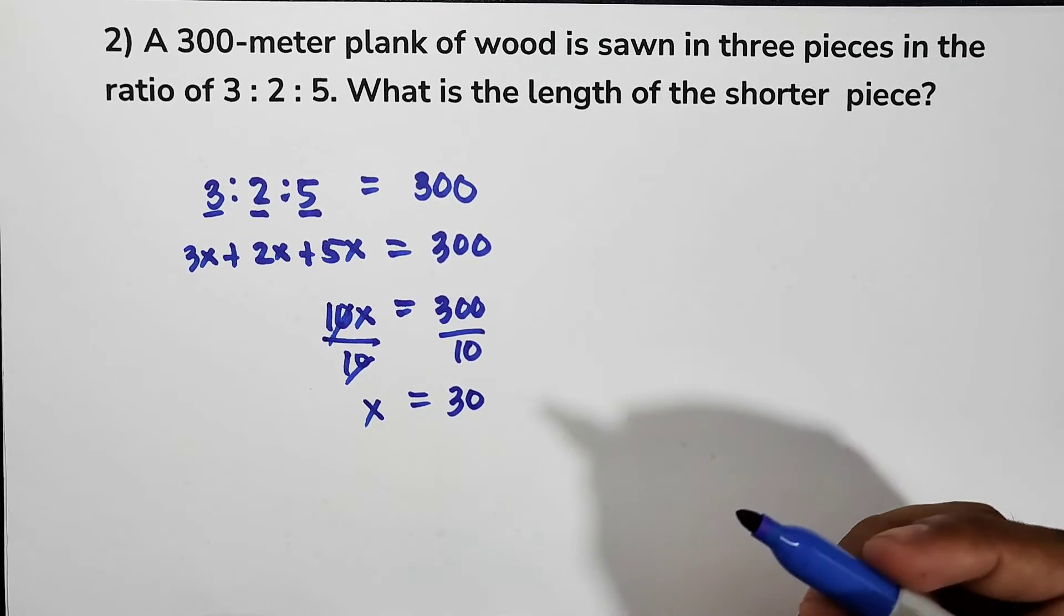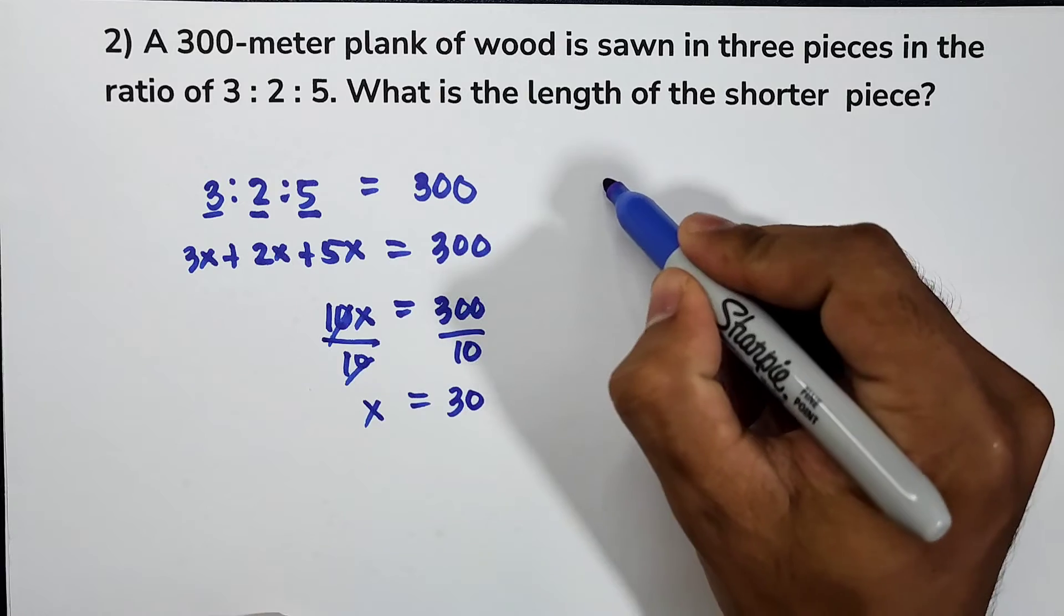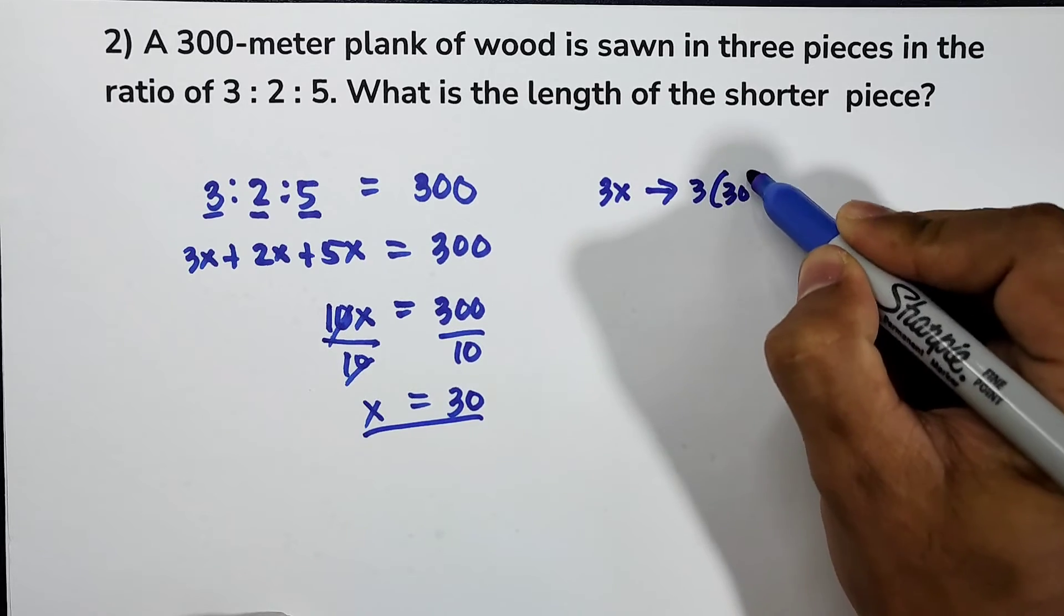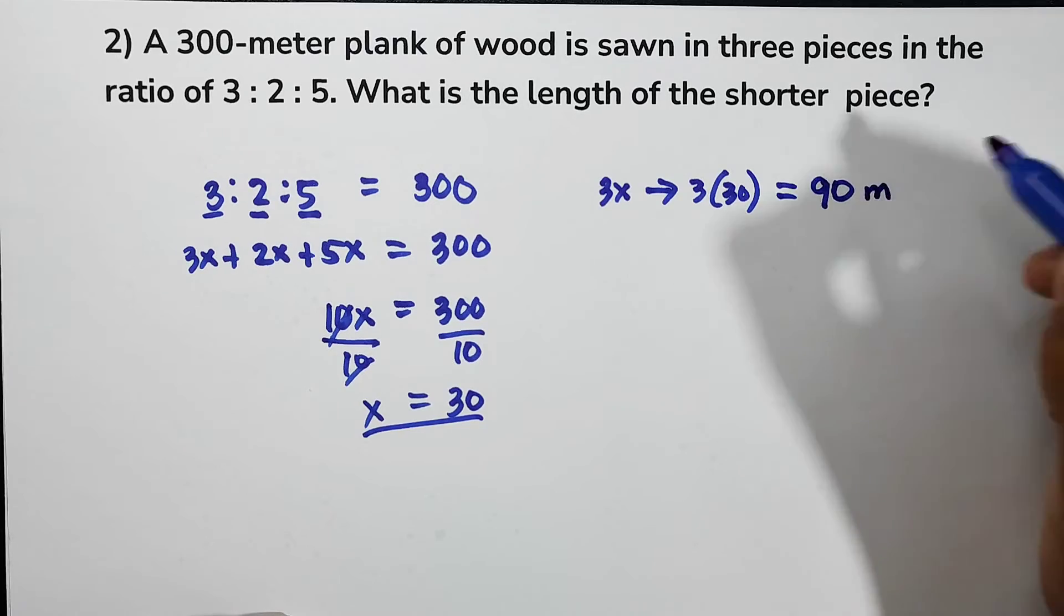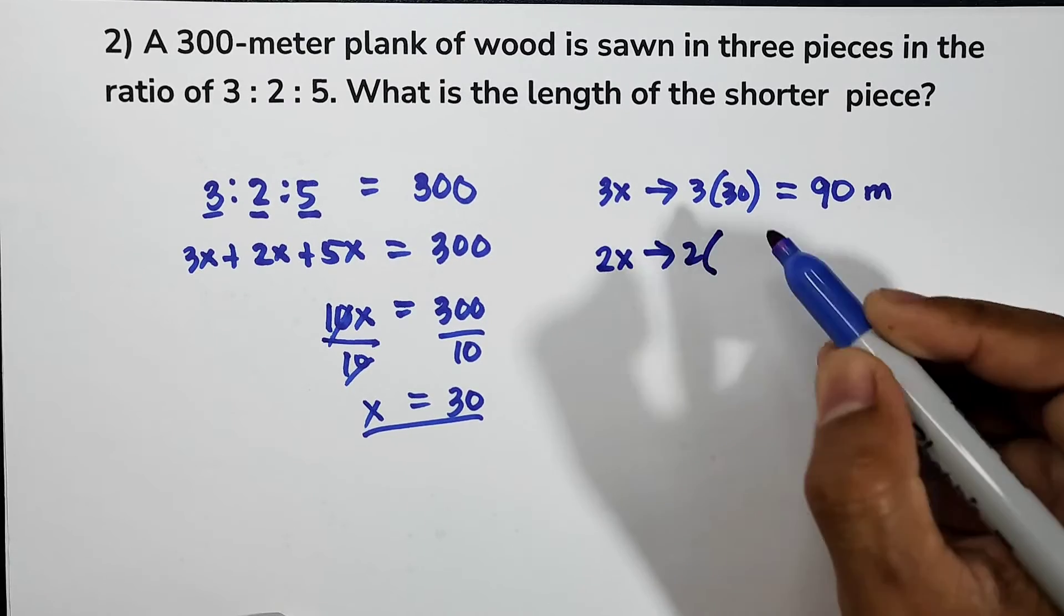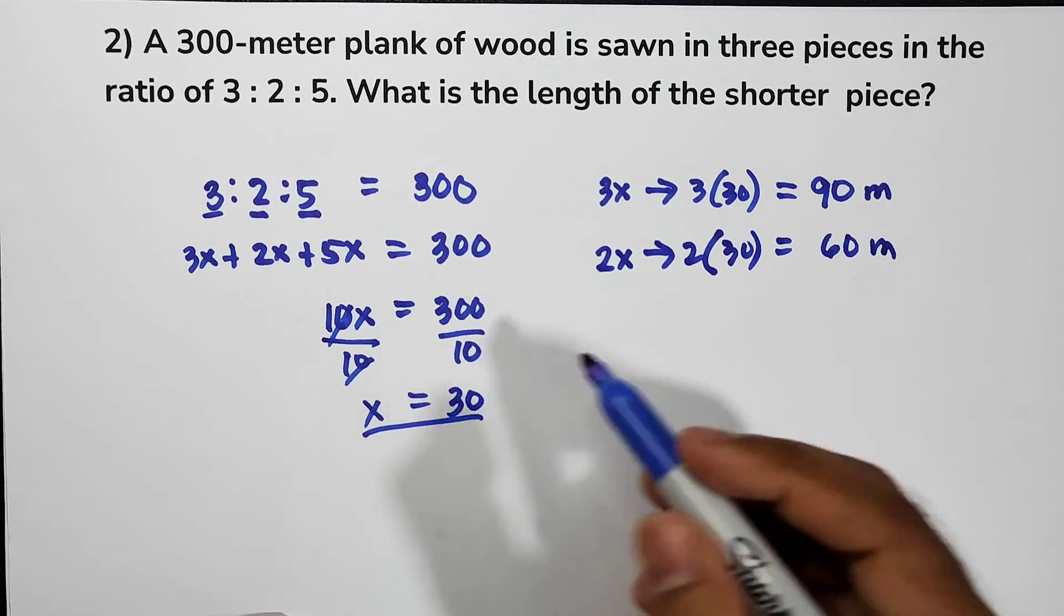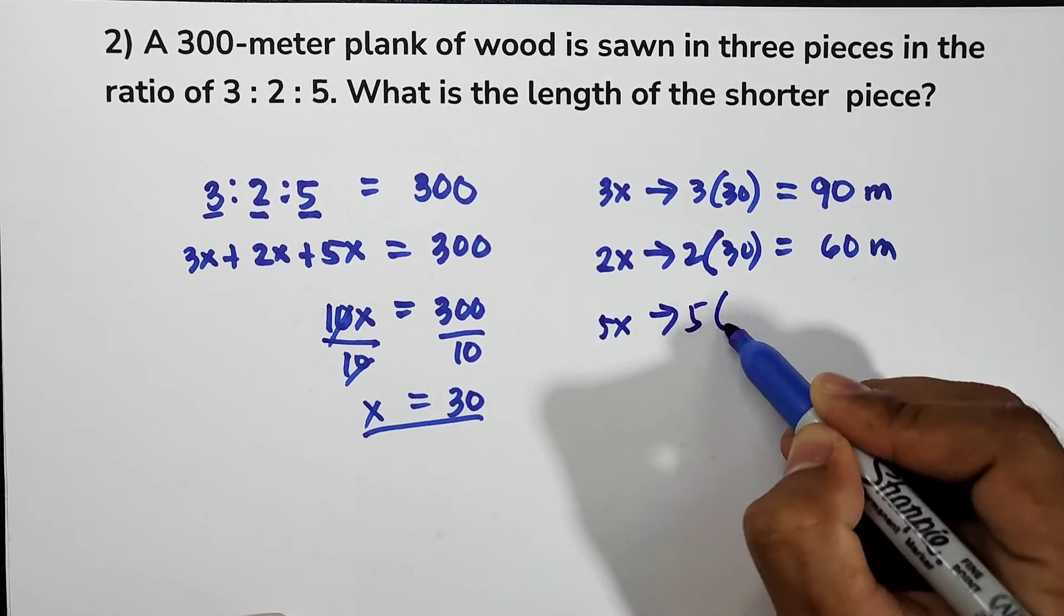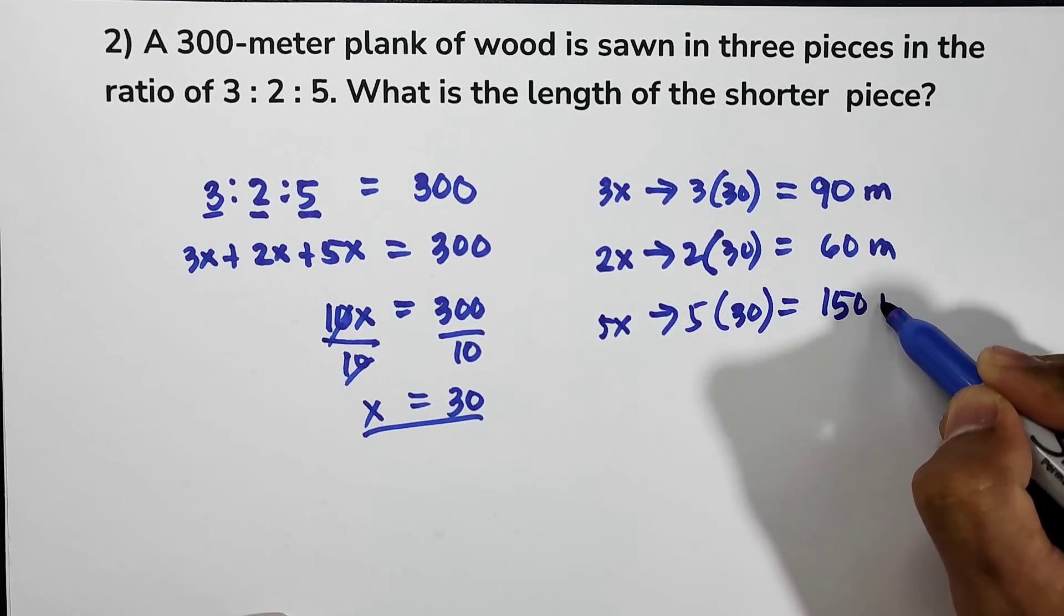Now let us find the measure of each piece by the ratio of 3 to 2 to 5. So 3, that is 3x. The value of x is 30. So 3 times 30, that is equal to 90 meters. And then 2 is 2x, that is 2 times 30, that is equal to 60 meters. And then 5 is 5x. 5 times x is 30, so that is equal to 150 meters.